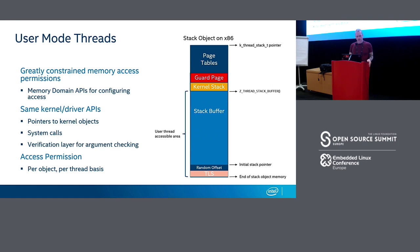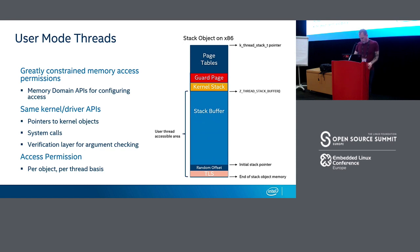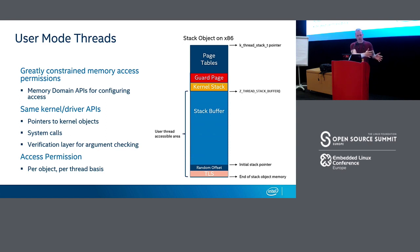A thread can get permission on other kernel objects by being granted it by other threads. The initial granting of permission must originate from threads running in supervisor mode. If a thread has permission on another thread and permission on a particular kernel object, it can transfer that permission to that other thread. When making system calls we need rigorous checking — for parameters like memory buffers, we need to confirm the calling thread actually has access to that memory before we do anything with it, and the pointers to kernel objects themselves must also be validated.